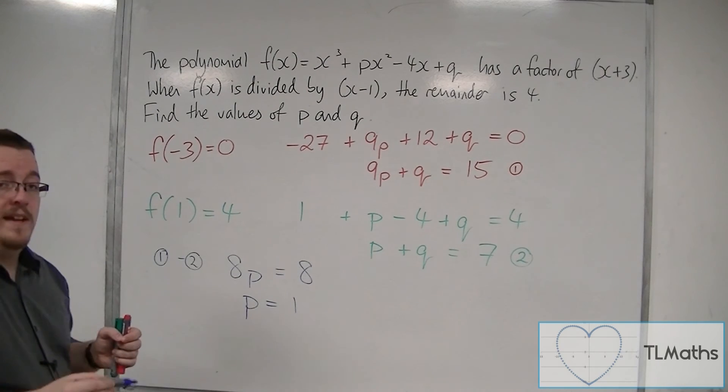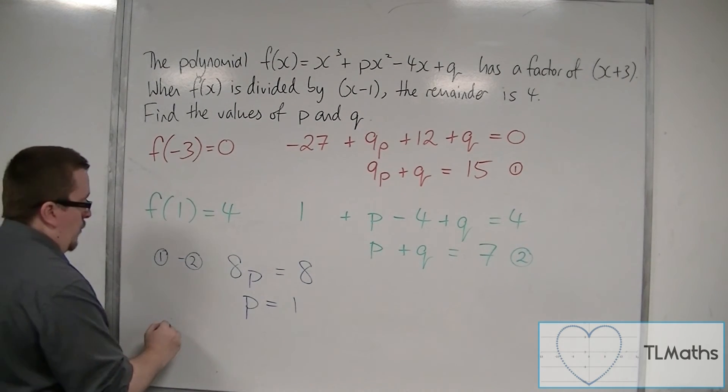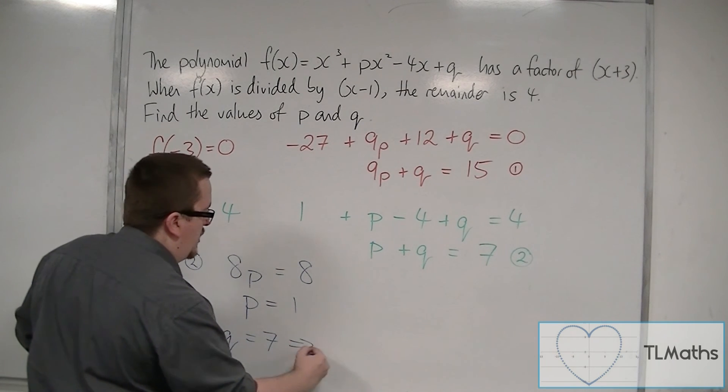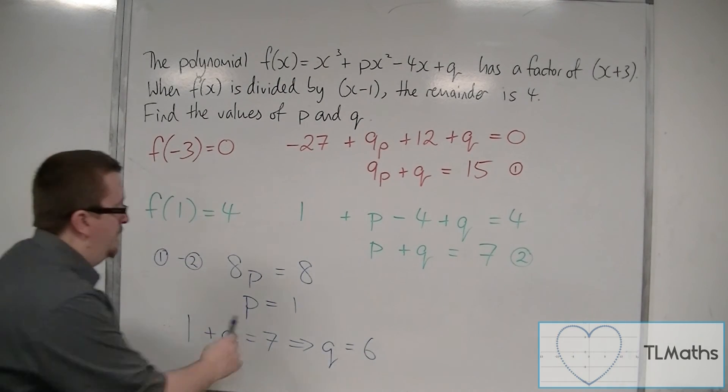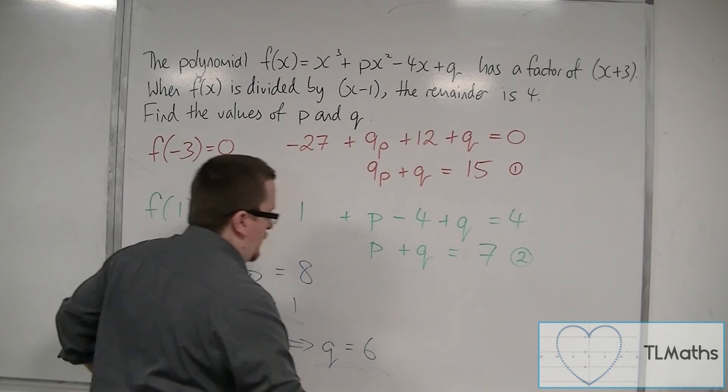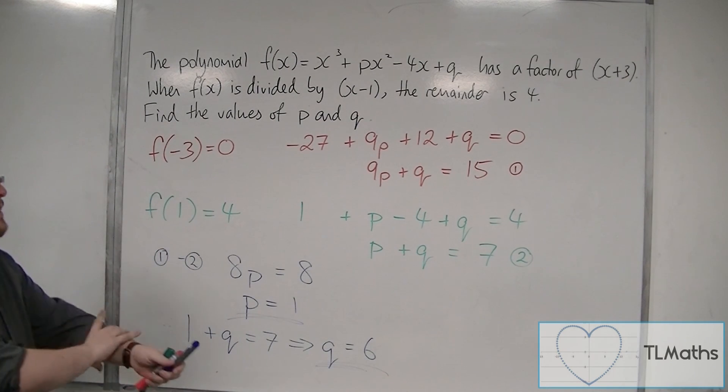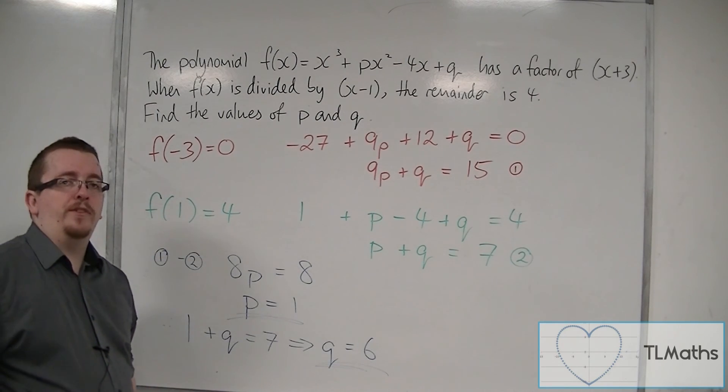I can then substitute that into one of the two equations, that was the easiest. So 1 plus q is 7, and so q must be 6. And that gives me the value of p and the value of q, which is what I wanted. So that's how we can use the factor theorem and the remainder theorem to set up a pair of simultaneous equations in this case.